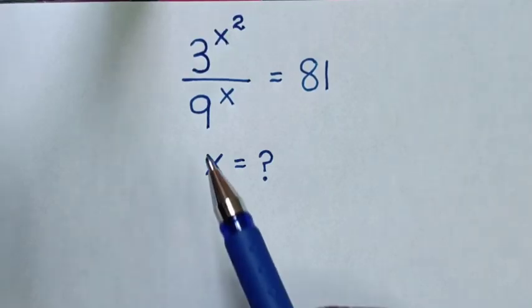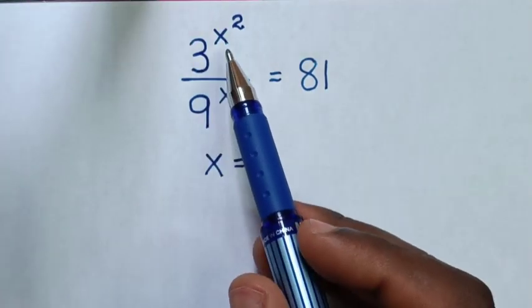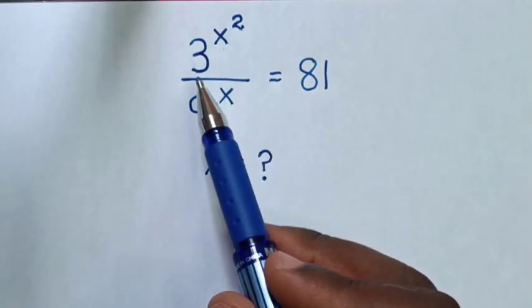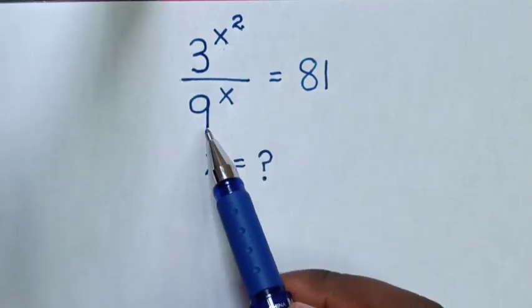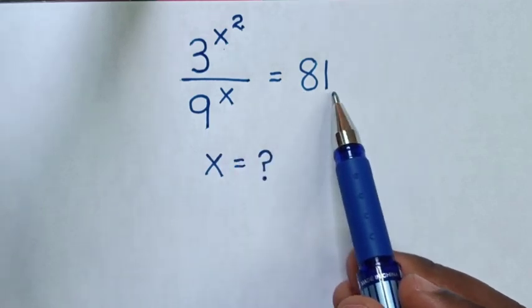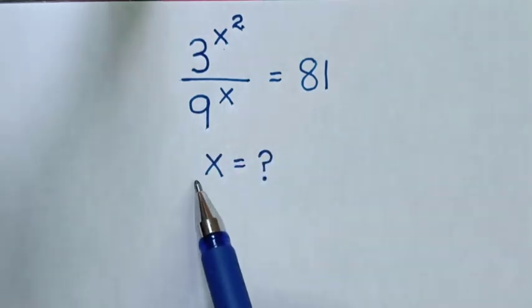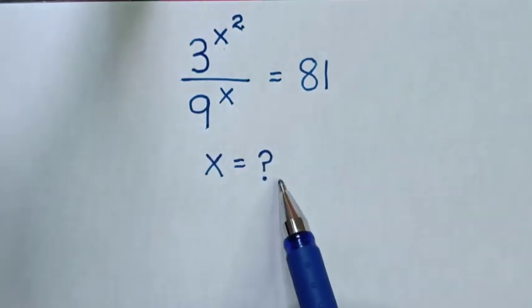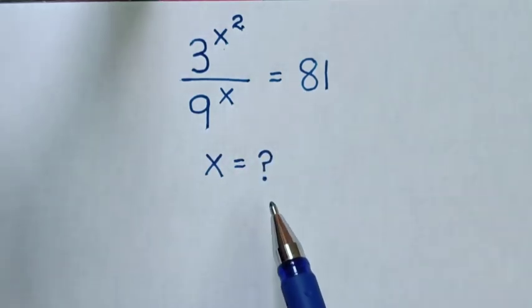Hello, how to solve 3 power of x square over 9 power of x is equal to 81, to find the value of x from this equation.